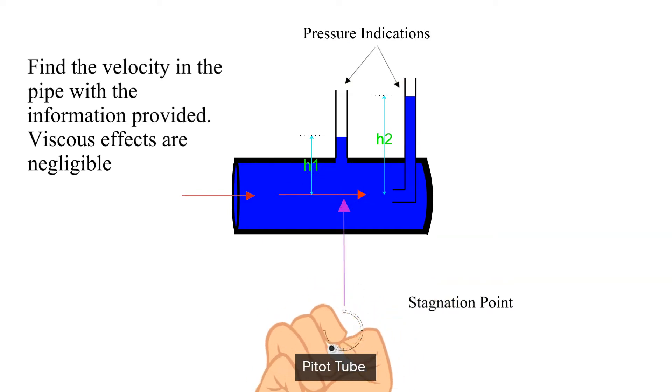We will identify two points for the application of Bernoulli's equation. Point one is beneath the first standpipe. Point two is at the stagnation point.